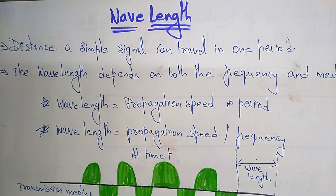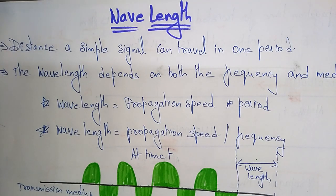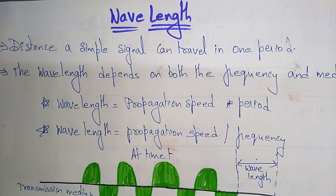Hi students, let's continue with data communications. The next topic is wavelength. Whatever data you are transferring from source to destination over a network, you need to know what the wavelength of a signal is and how you can find it.